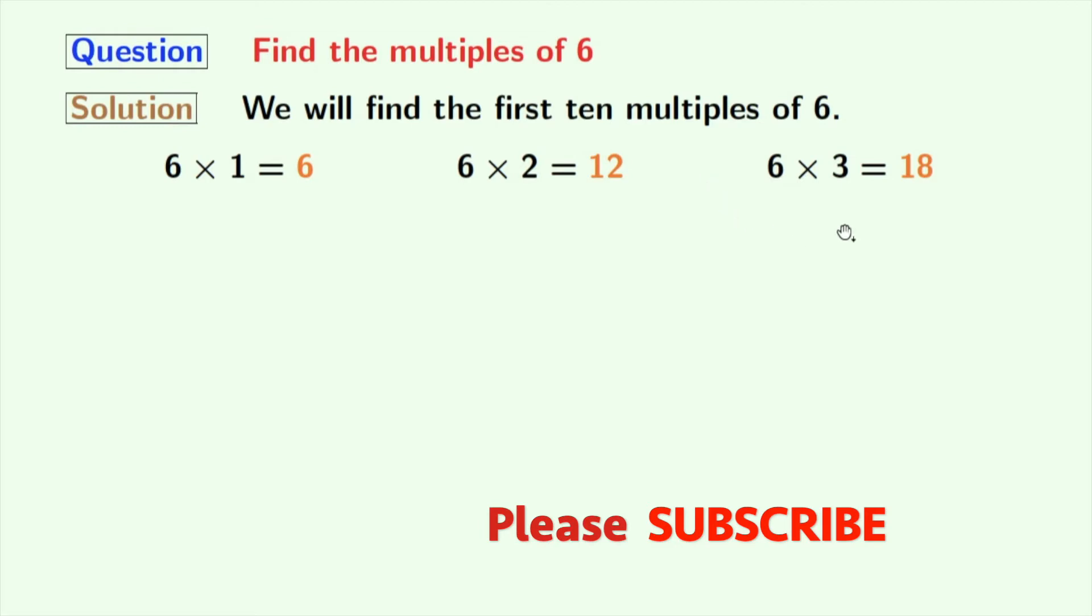Multiplying 6 with 3, we get 18. Multiplication of 6 and 4 gives us 24. Multiplication of 6 and 5 gives 30.